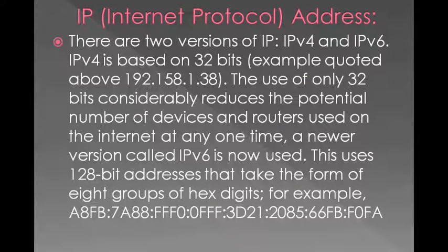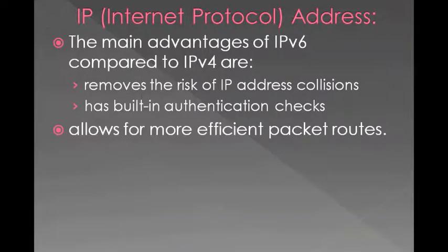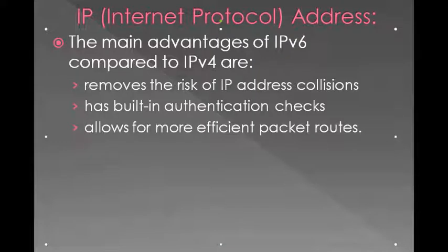An example of an IPv6 address is shown below. It consists of eight groups of hexadecimal characters, with four hexadecimal characters in each group. The main advantages of IPv6 are: it removes the risk of IP address collisions so no two devices would have the same IP address; it has built-in authentication checks making it more secure; and it allows for more efficient packet routing — packets are sent more efficiently when using IPv6.